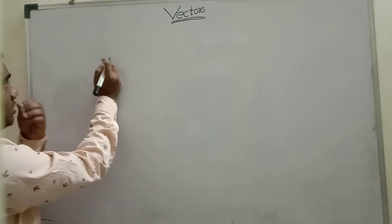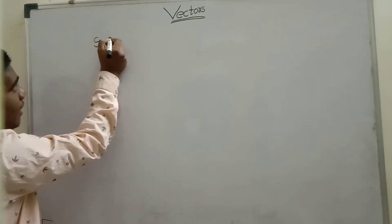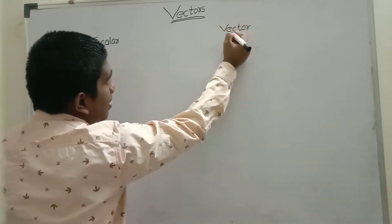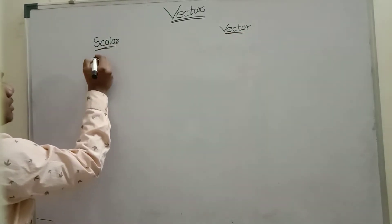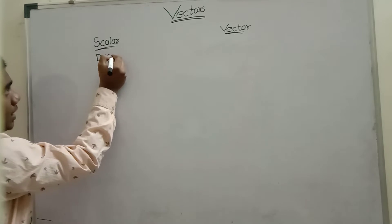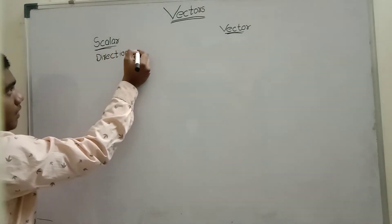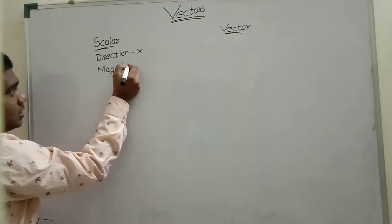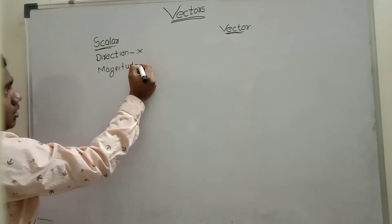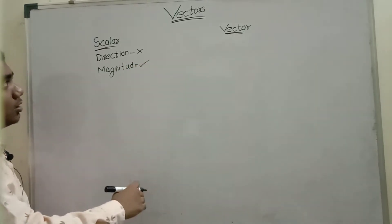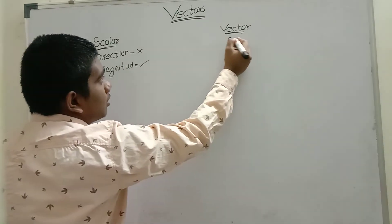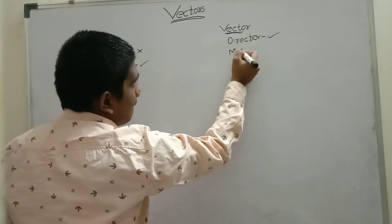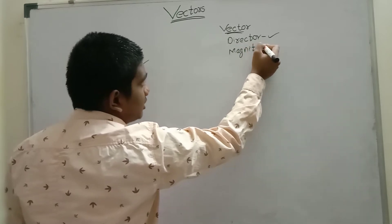Physical quantities are mainly of two types: Scalar and Vector. Scalar means which has no direction, but magnitude is there. Magnitude means a certain value, like kilograms or centimeters. Whereas Vector means it has both direction and magnitude.